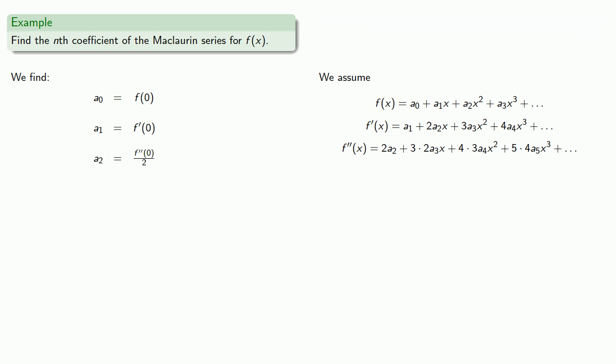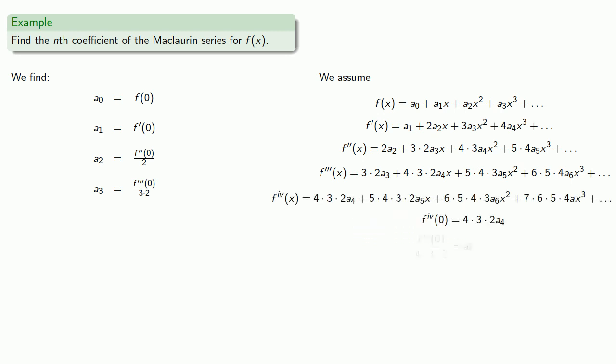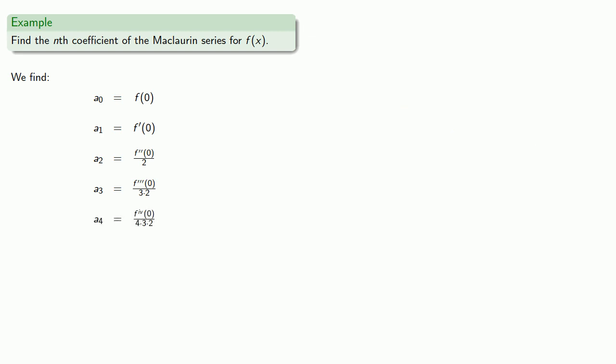And now lather, rinse, repeat. We'll find our derivative, solve for our third derivative at zero, then solve for a3. And a4, and now we want to generalize.